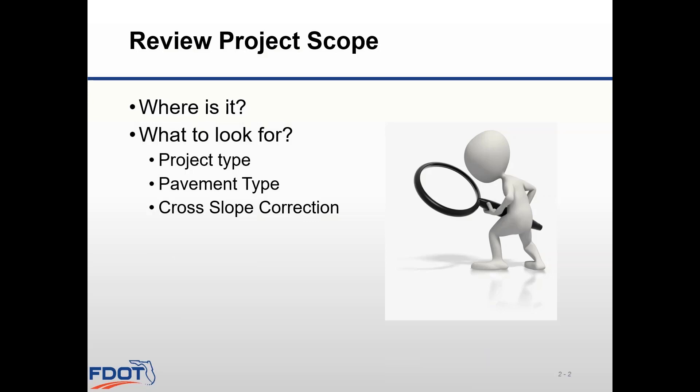The first step is to review the project scope of services. You need to know what is being done in the project before you can go collect data for it. The best place to get a copy of your project scope of services is from the department project manager. Making contact with your PM will allow you the opportunity to talk to them about any specific elements related to your project that they may already be aware of.